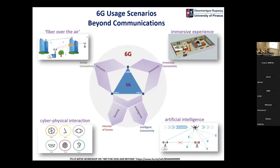In terms of scenarios for the upcoming generation, 6G, there are many variants and flavors in describing those scenarios, as discussed in previous talks. If I had to summarize, I would list four main trends. The first is what we used to call 'fiber over the air' — you may call it ubiquitous connectivity or inclusion — the idea of providing connectivity of very high rate and reliability everywhere and to everyone.